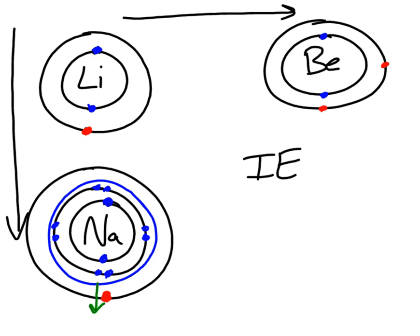For lithium, there are only two core electrons, which means there are not as many negative charges shielding this red valence electron. So lithium's valence electron is a little closer to the nucleus than sodium's valence electron. That's why lithium takes a little more energy to remove that electron — because it's closer to the nucleus, it's more attracted to it. The more shielding there is, the harder it is for the nucleus to hold on to that valence electron.